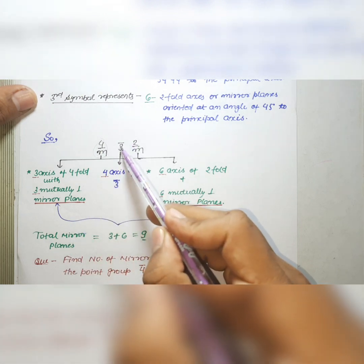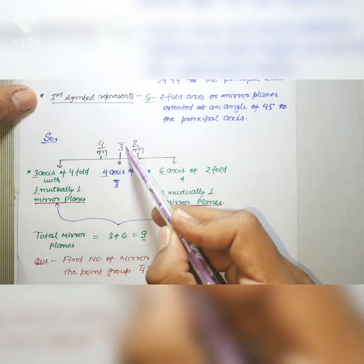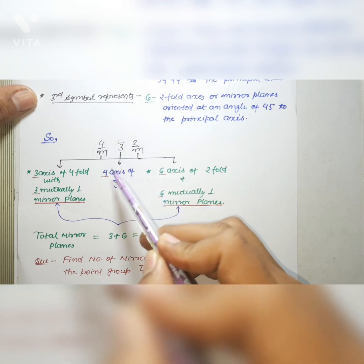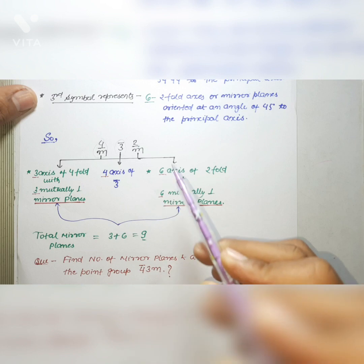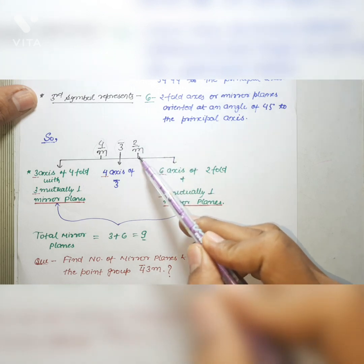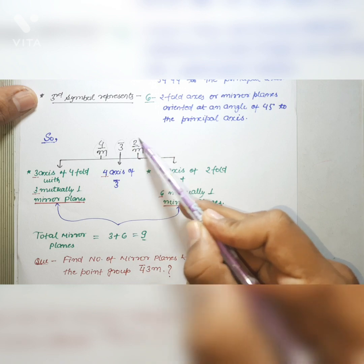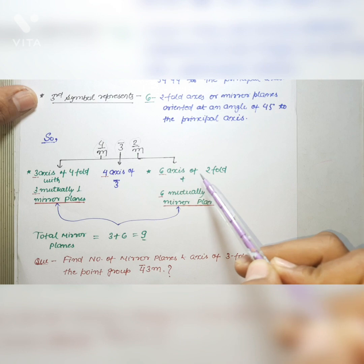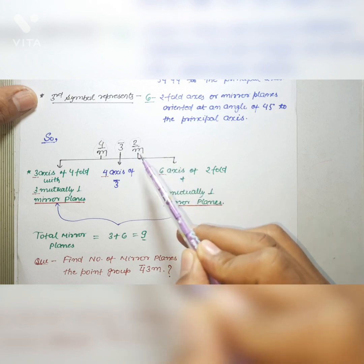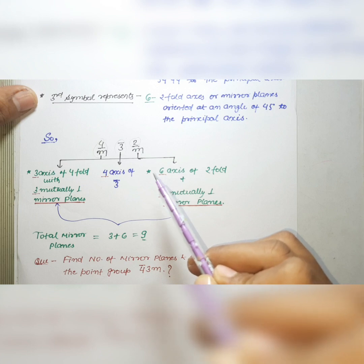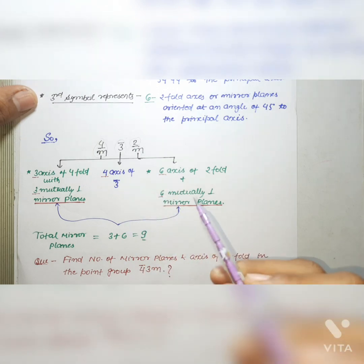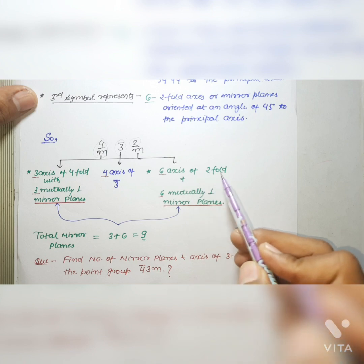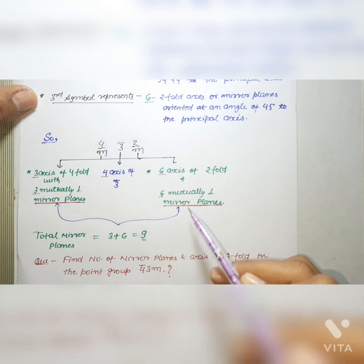The second symbol, 3̄, represents four axes oriented at an angle of 54°44' to the principal axis, so there are four 3̄ rotation axes. The third symbol, 2/m, represents six twofold axes or mirror planes oriented at 45° to the principal axis. So 2/m indicates six twofold axes, and the 'over M' indicates six mirror planes perpendicular to those axes.